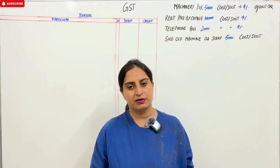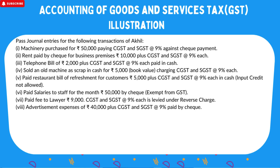We are going to show you the next illustration on screen — journal entries on the books of Akhil. First is machinery purchase Rs. 50,000, paying CGST and SGST at 9% each against cheque payment. Second is rent paid by cheque for business premises, Rs. 10,000 plus CGST and SGST at 9%.